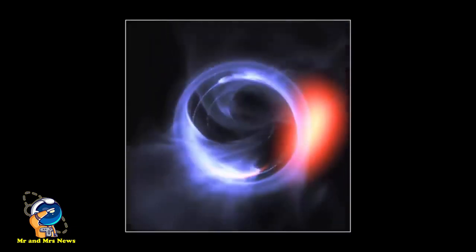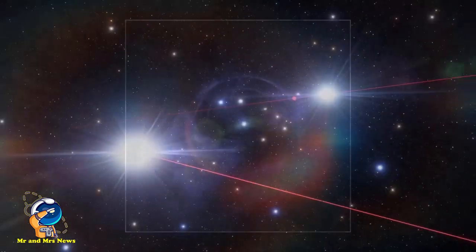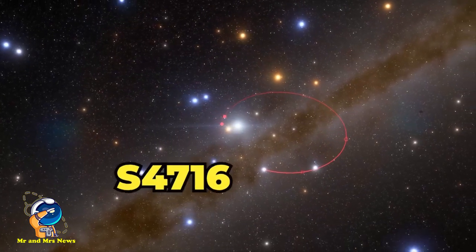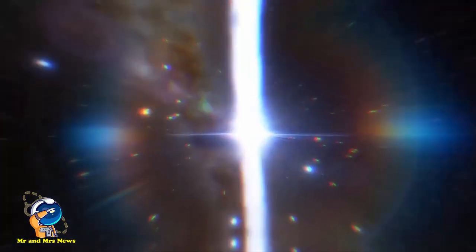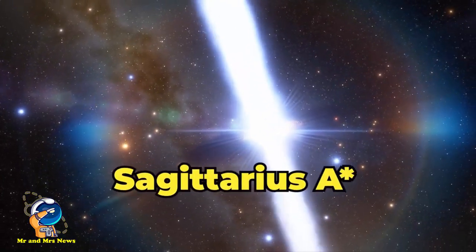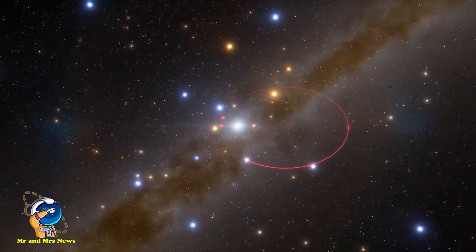Penemuan bintang tercepat di sekitar lubang hitam yang begitu dekat dengan Sagittarius A dapat mengubah pemahaman kita tentang bagaimana galaksi kita berevolusi, terutama mengenai bintang pusat yang bergerak cepat.